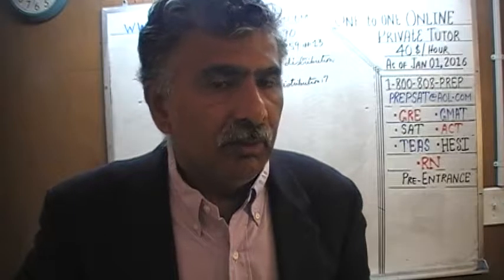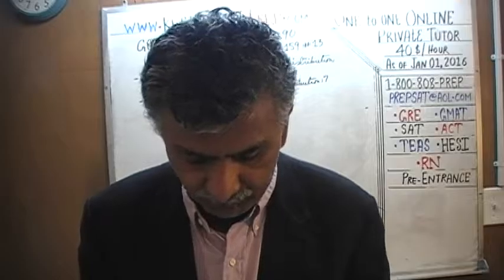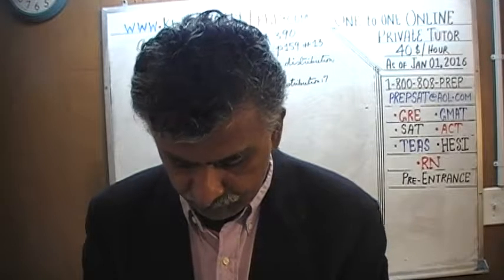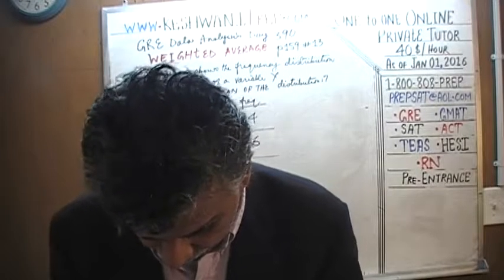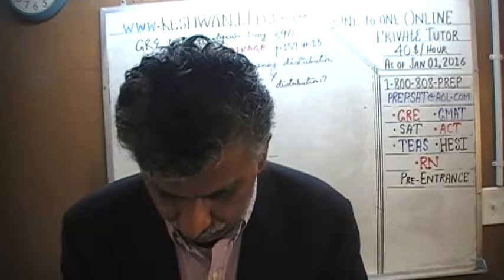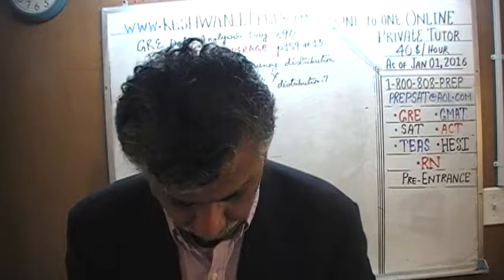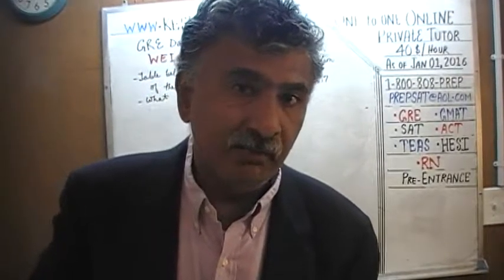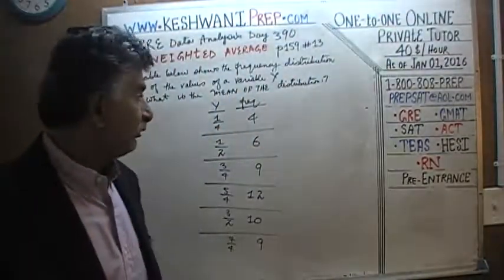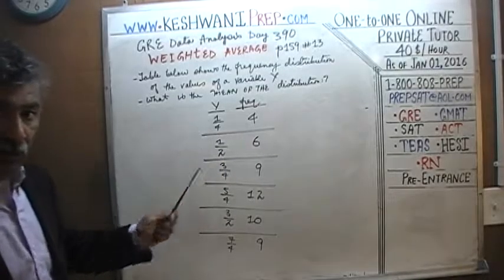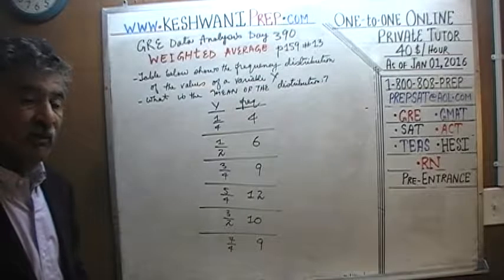Think of this in terms of money — it makes it easier. This is similar to the question on page number 132 where they talk about a charity event. Think of this as a charity event. We had four people who gave a quarter — twenty-five cents. We're going to solve this problem in terms of quarters.